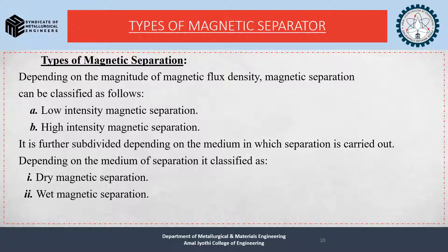Types of magnetic separation: depending on the magnitude of magnetic flux density, magnetic separation can be classified as low intensity magnetic separation and high intensity magnetic separation. It is further subdivided depending on the medium in which separation is carried out — classified as dry magnetic separation and wet magnetic separation.